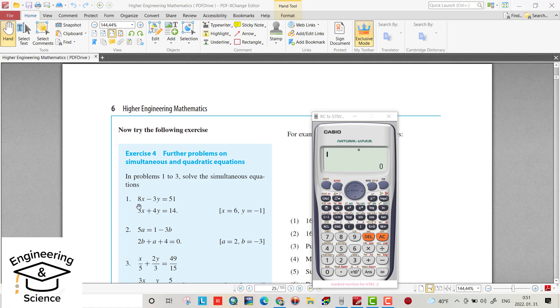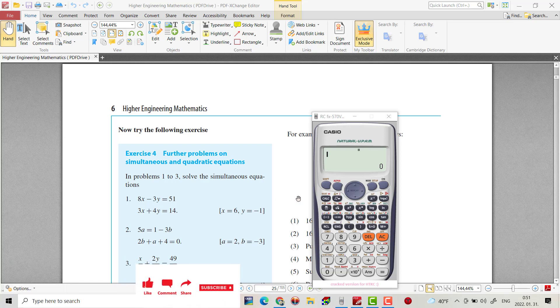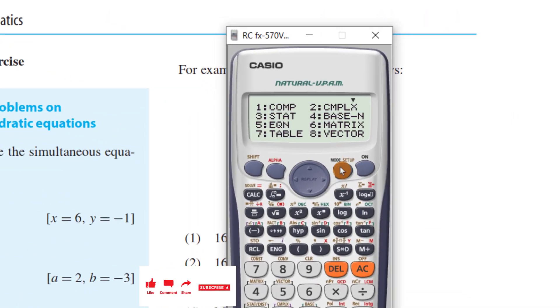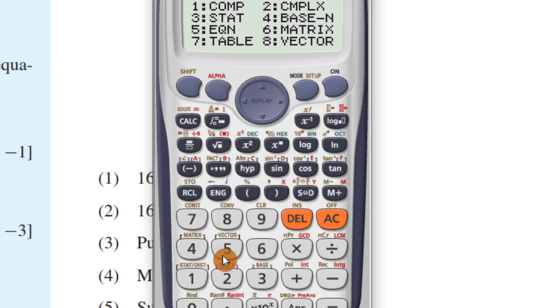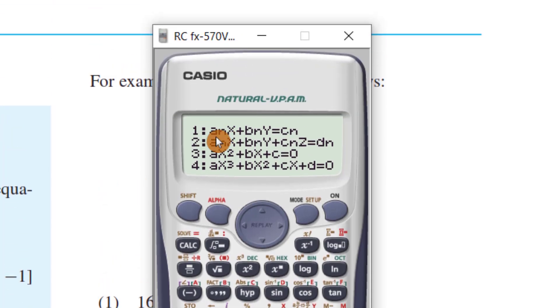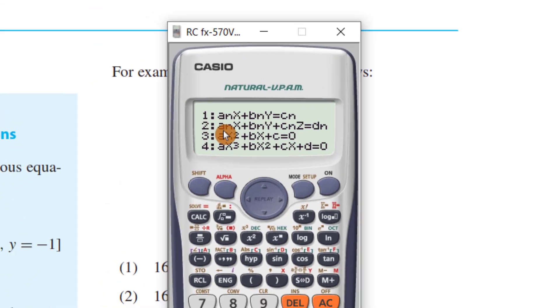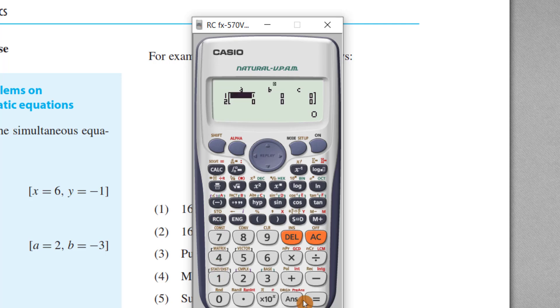Let's start with 2 unknowns. We have this problem and the solution is x equal to 6 and y equal to minus 1. This is verified by calculator. First, mode, then 5 belongs to equations and the first one belongs to simultaneous equations with 2 unknowns.